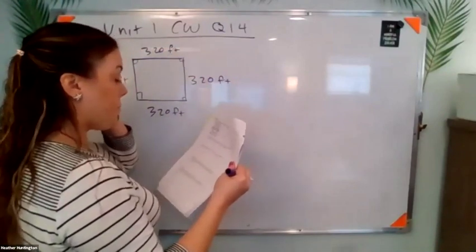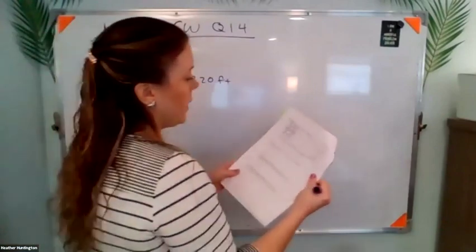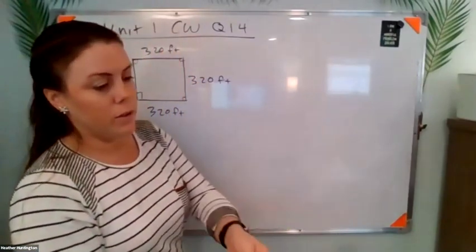What is the perimeter of the field? And then next, if you double the length of each side of the field, what is the new perimeter?